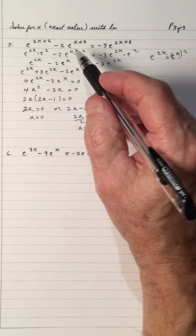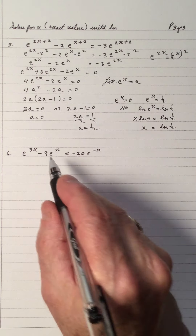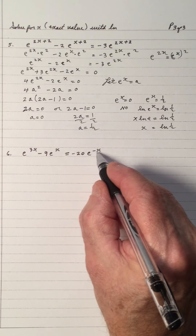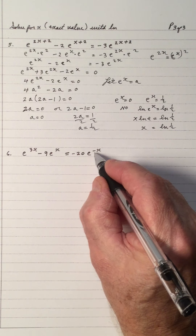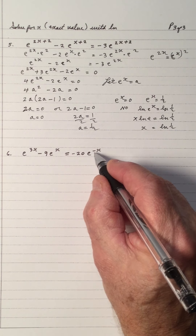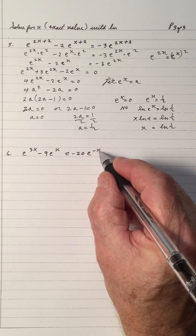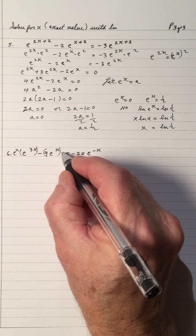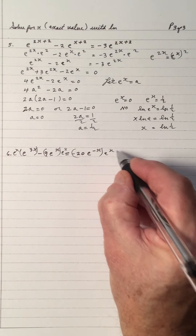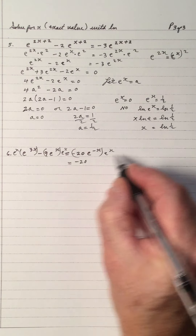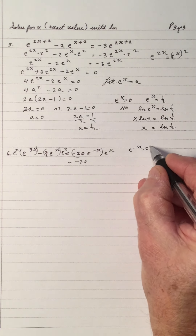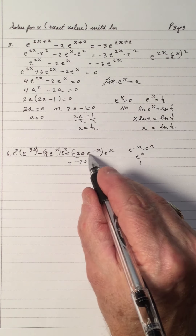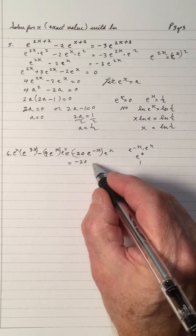We have a similar equation with e to the negative x, e to the x, and e to the 3x. One of the easiest approaches is to eliminate negative exponents. The reciprocal of e to the negative x is e to the x, so I multiply each term by e to the x. Because e to the negative x times e to the x equals e to the 0, which is 1, multiplying removes the negative exponent.